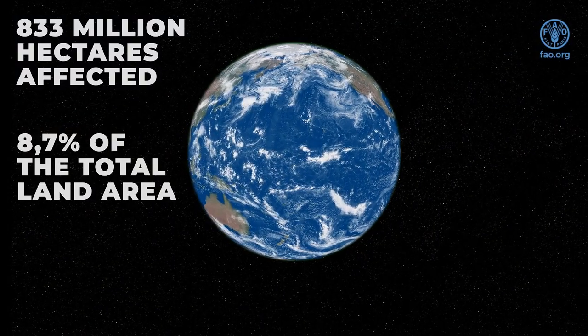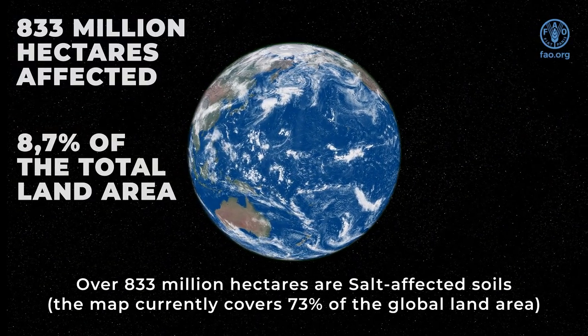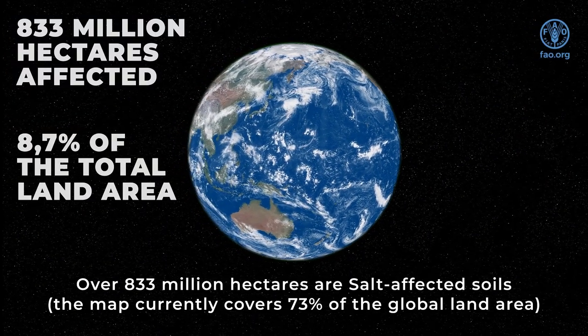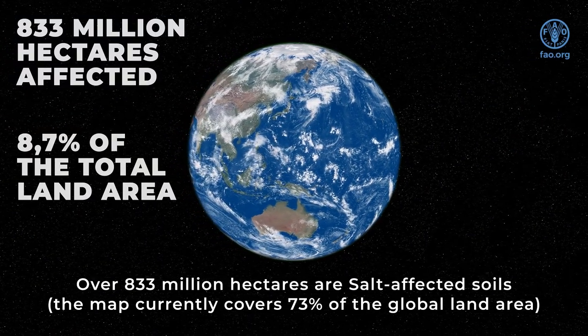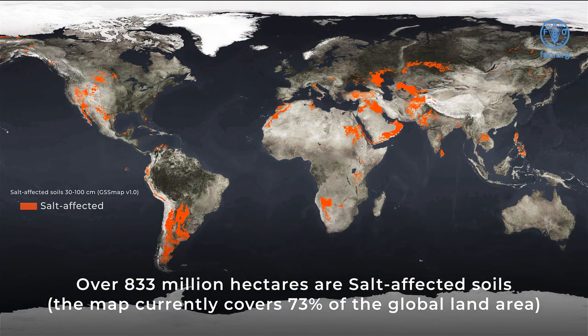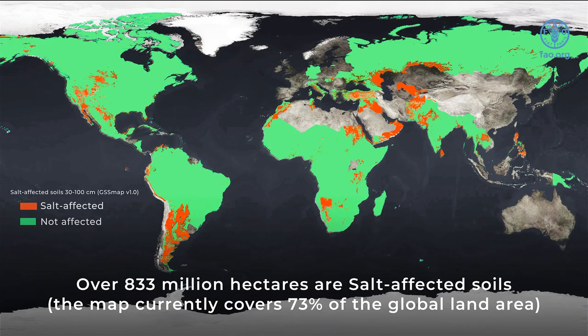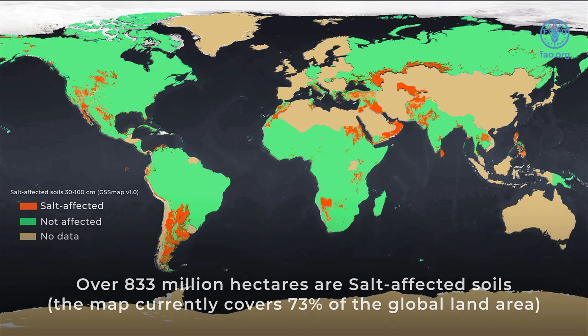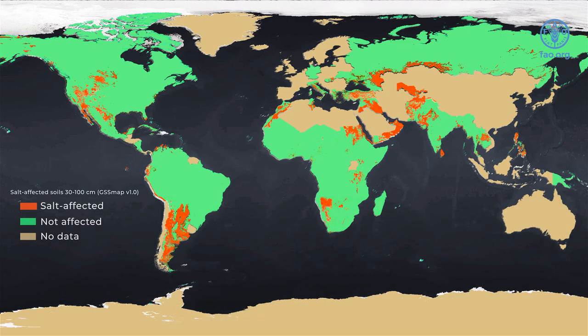Over 833 million hectares are salt-affected soils. The map currently covers 73% of the global land area.